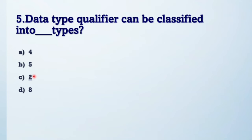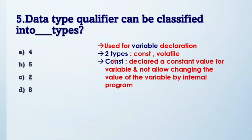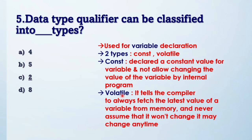So answer is two. Why two? Because type qualifiers are used for variable declaration and there are two types: const and volatile. So const is used to declare a constant value for a variable and not allow changing the value of that variable by the internal program. If you declare const, it will not change during the internal program. Volatile tells the compiler to always fetch the latest value of a variable from memory and never assume that it won't change—it may change anytime.